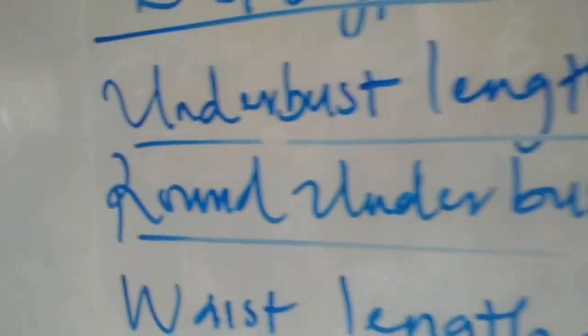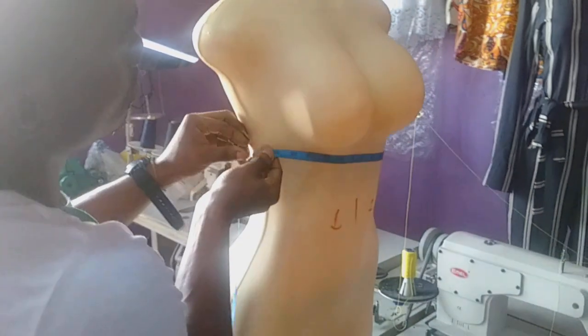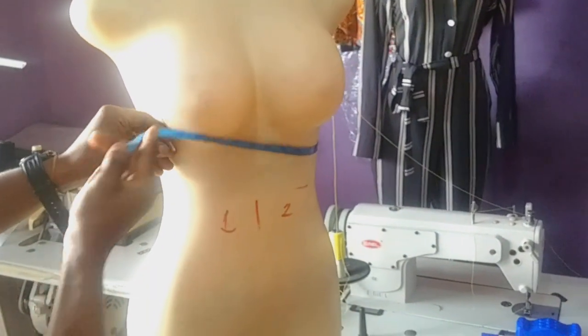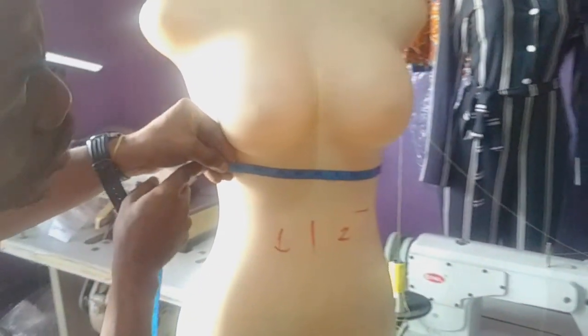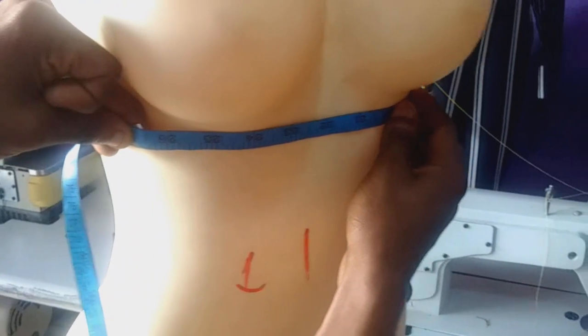Let me use the mannequin to explain. To get the under bust point, from the shoulder move directly to the under bust — this is also 13 inches. The nipple point is 9 and a half. After getting the under bust length, you put your tape round the under bust to get the circumference. Don't make it too tight or too loose. The round under bust here is 26 and a half inches.